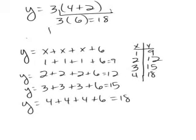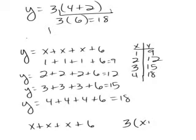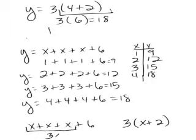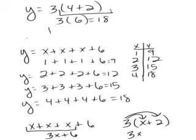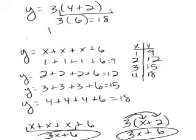The reason is because the two expressions that I used were equivalent. I used x plus x plus x plus x plus 6, and I also used 3 times the quantity x plus 2. If I combine like terms — x plus x plus x — that's 3x boxes plus 6. And if I distribute the multiplication, 3 times x is 3x and 3 times 2 is 6. So I should have the same thing in my table with those two expressions.